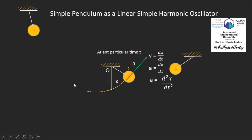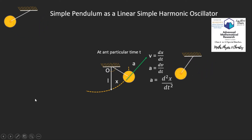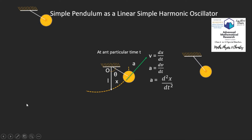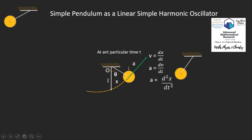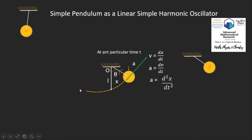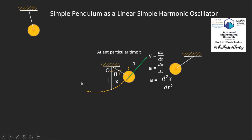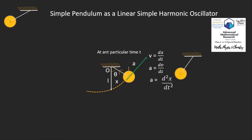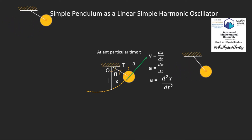We assume the pendulum length is L. We also assume the angular displacement θ is quite small — remember, the simple pendulum represents simple harmonic motion only for small angular displacement θ. The tension T acts along the string from which the pendulum is suspended.